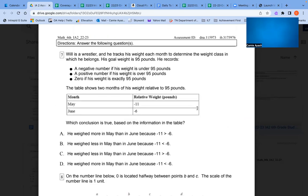Number 7: Will is a wrestler and he tracks his weight each month to determine the weight class in which he belongs. His goal weight is 95 pounds. He records a negative number if his weight is under 95 pounds, a positive number if his weight is over 95 pounds, zero if his weight is exactly 95 pounds. The table shows two months of his weight relative to 95 pounds.